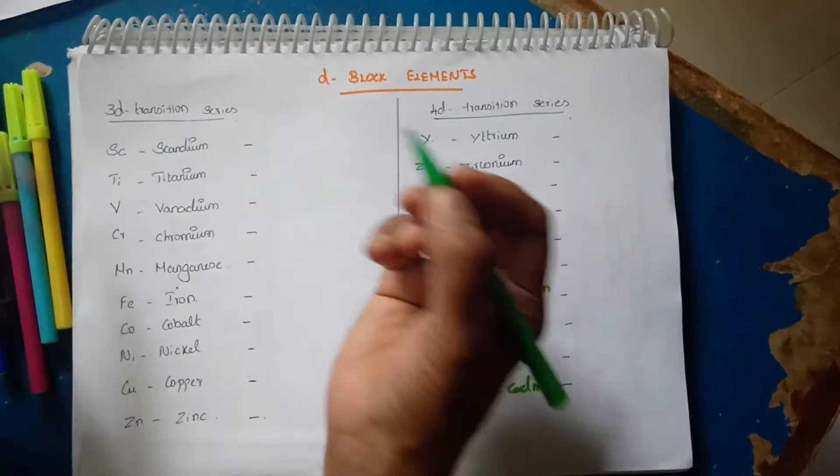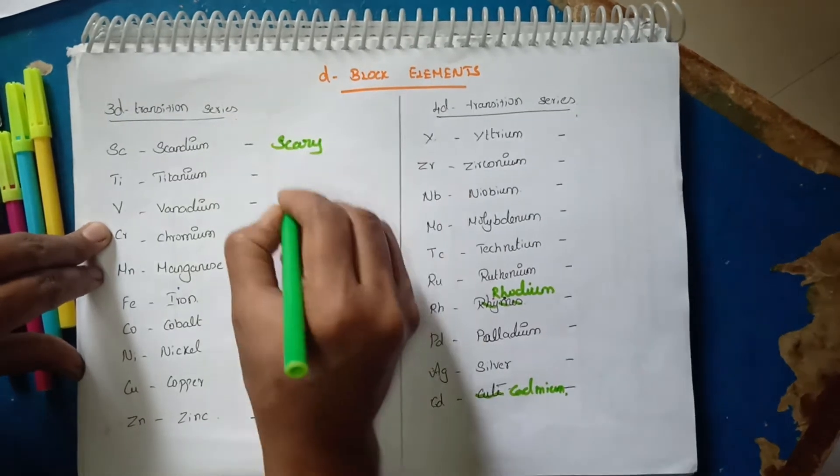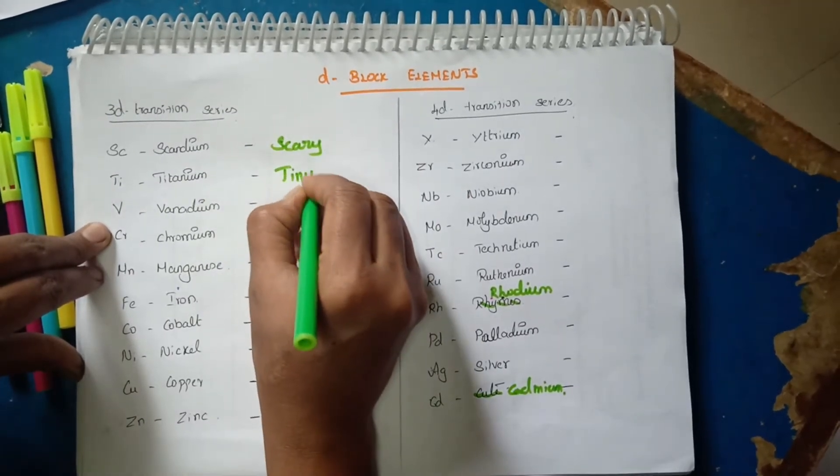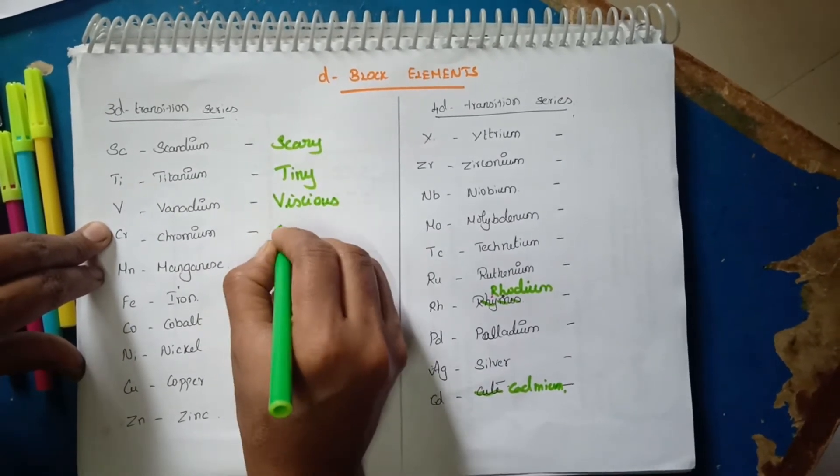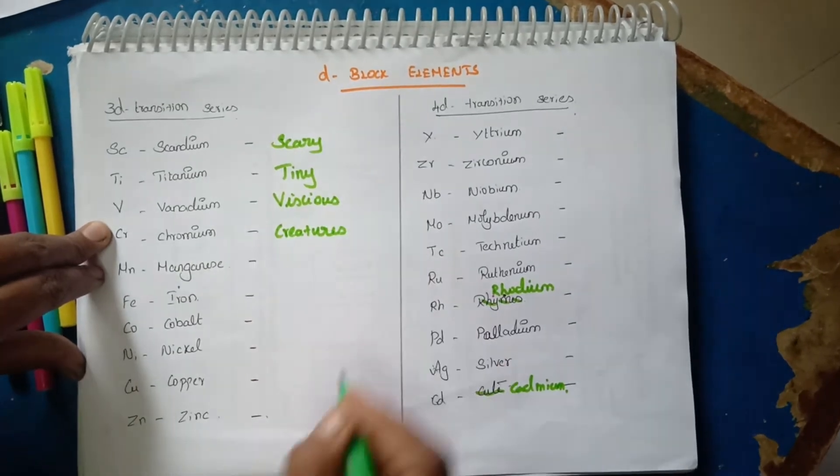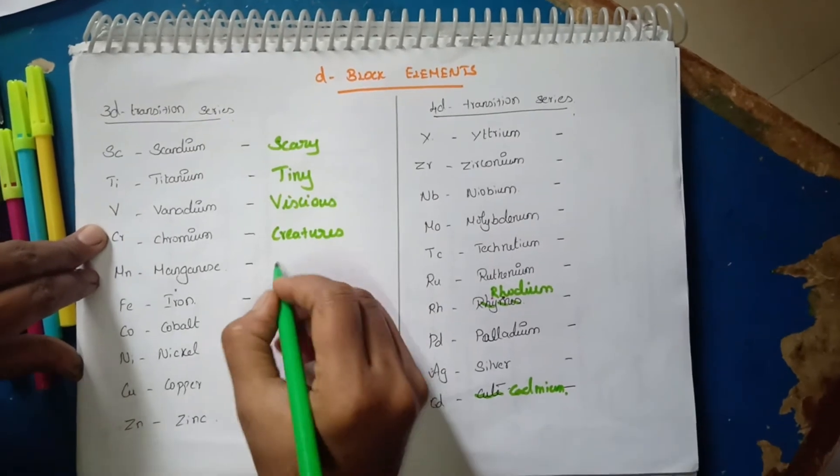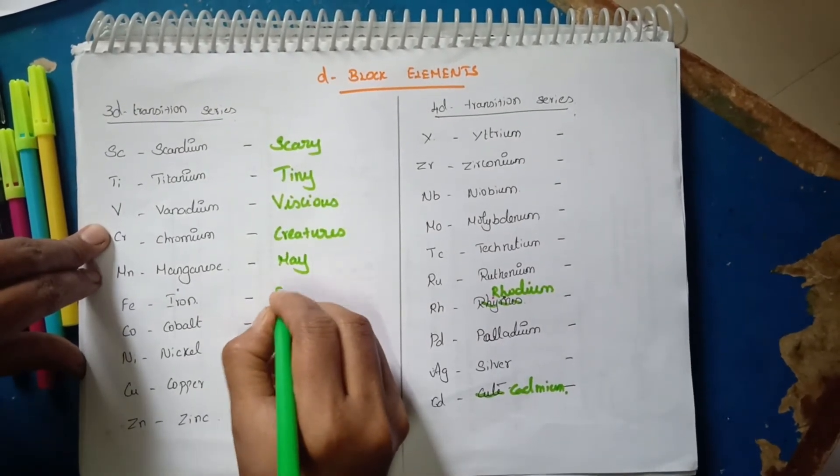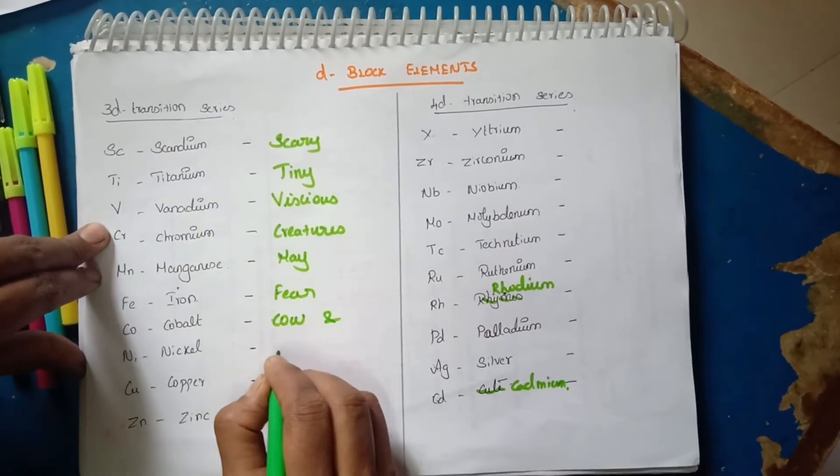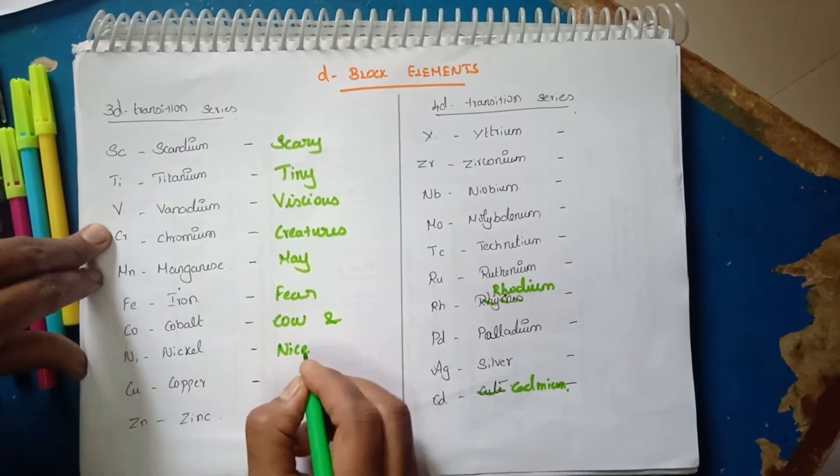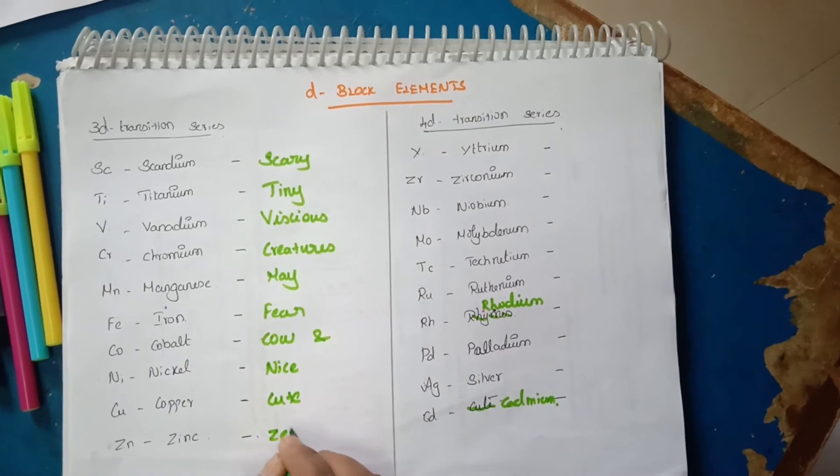Let's say the first 3D transition series. First, Scary, Tiny, Vicious, Creatures, Make May Fear Cow and Nice, Cute, Zebras.